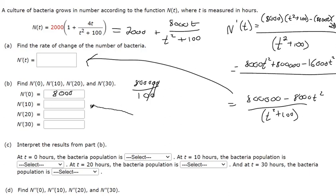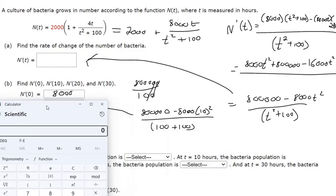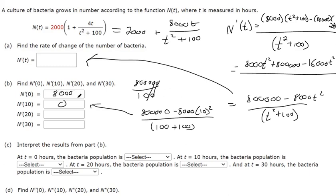And for the derivative at 10, you're just plugging in 10 everywhere. So in the numerator, we've got this. So 10 squared is 100. And then 8000 times 10 times 10. So 800,000 minus 800,000, we get zero in the numerator. It doesn't matter what the denominator is. This appears to be zero.